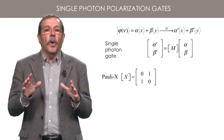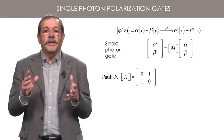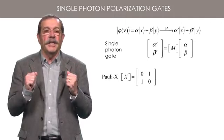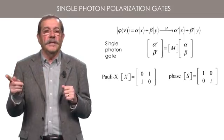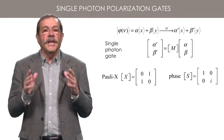A quarter-wave plate with axes along x and y can change a linear polarization at 45 degrees from x and y into a circular polarization. It is represented by a matrix 1, 0, 0, i and called a phase gate.